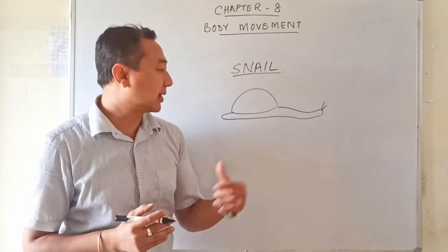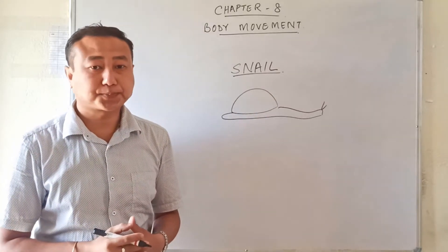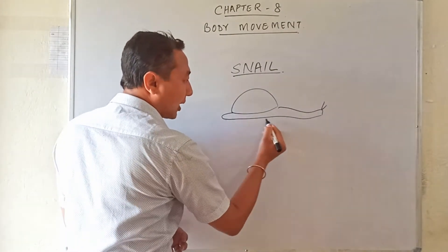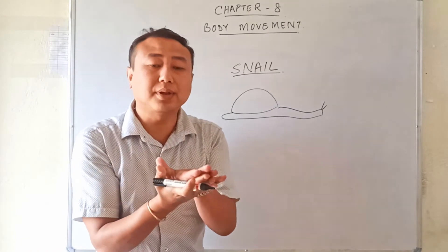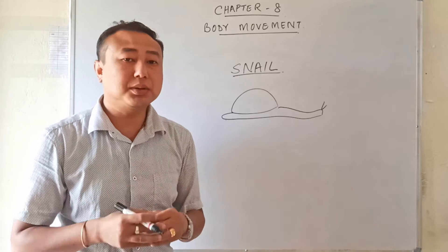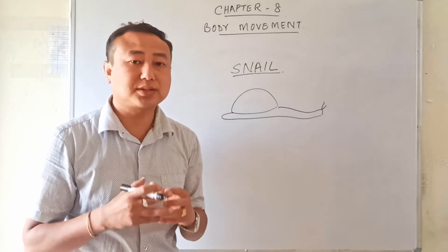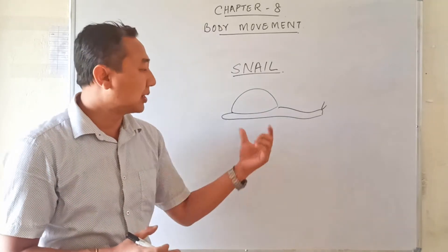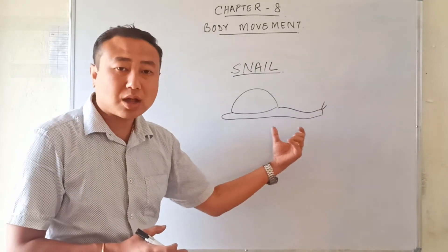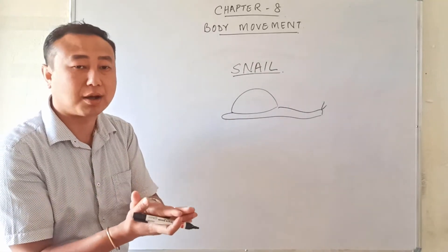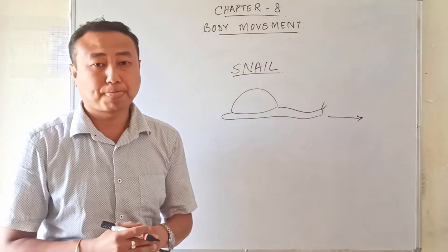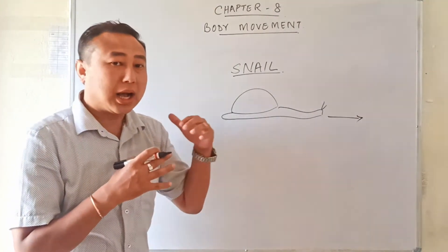The next animal is the snail. The snail has muscular feet at the lower portion of its body which are in contact with the ground surface. The regular contraction and expansion of these muscular feet helps the snail to move forward.